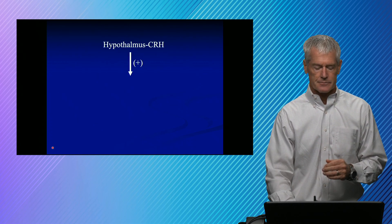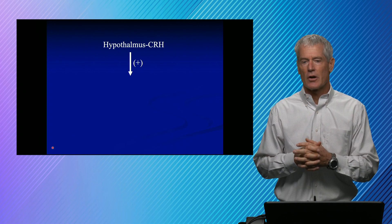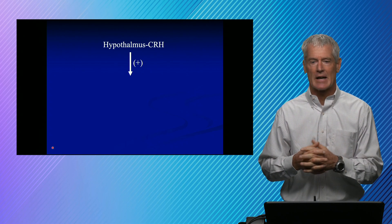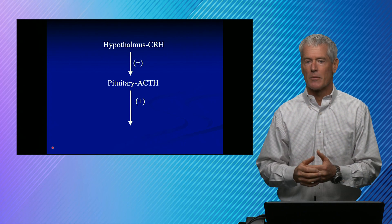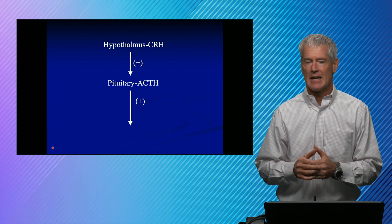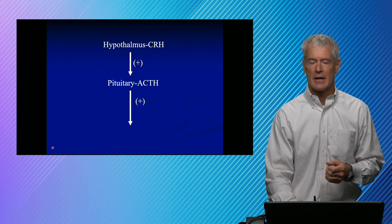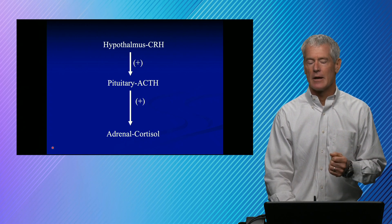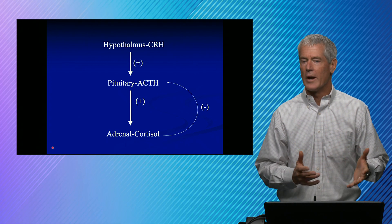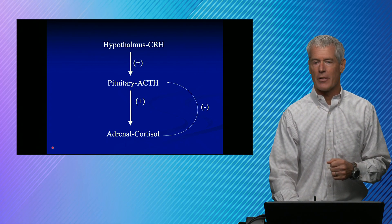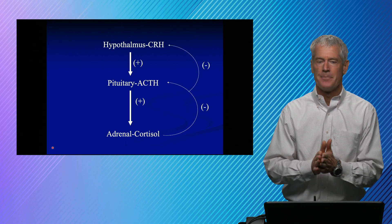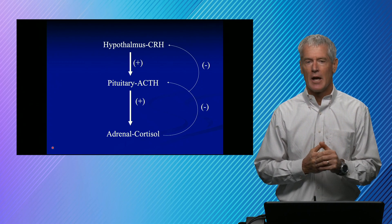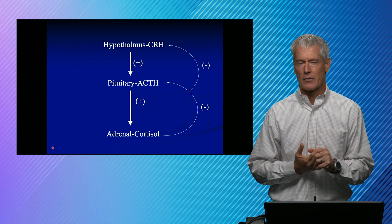The stimulus for cortisol secretion starts with the hypothalamus. Corticotropin-releasing hormone, or corticotropin-releasing factor, has a positive effect on the anterior pituitary, which releases ACTH. ACTH has a fairly short half-life and acts on the adrenal to increase cortisol. Cortisol is the primary stimulus for negative feedback — it feeds back both at the pituitary and at the hypothalamus. We talk about primary, secondary, or tertiary disorders, and we're going to talk about how to diagnose those various different kinds of problems.